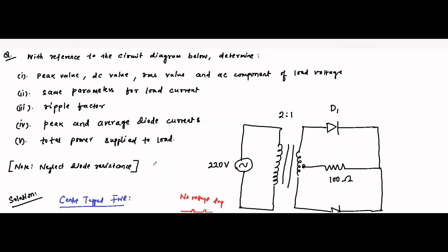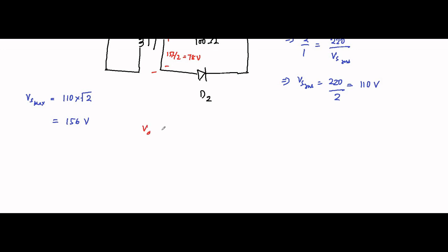Next we find the DC value. For full wave rectifier circuits, VDC = 2·Vmax/π. So VDC = 2 × 78 / π, which comes to approximately 49.6V. Note that 110 × √2 gives approximately 155.5V, which we rounded to 156V, so slight differences may appear depending on rounding.